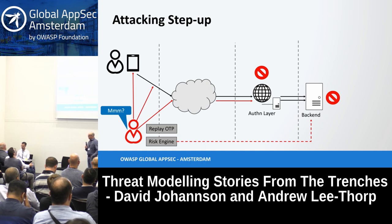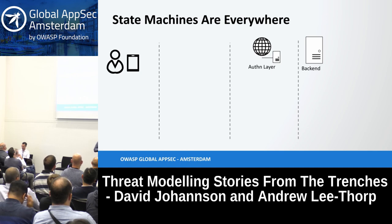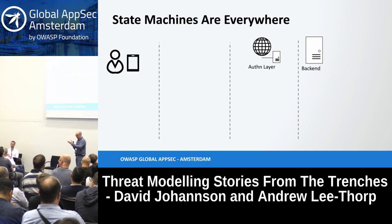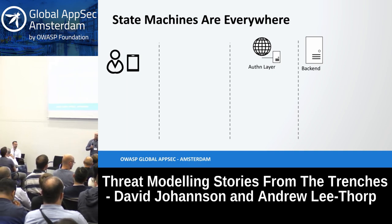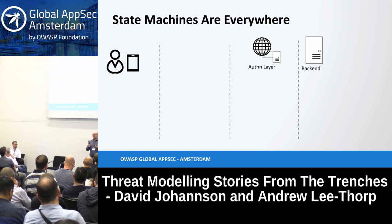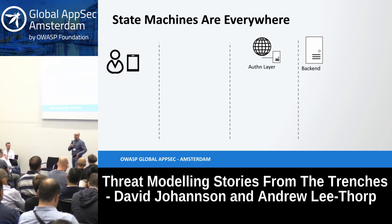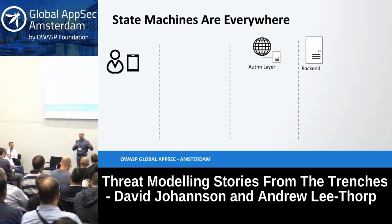What we need to remember is that when we're looking at these two-dimensional threat model diagrams, the systems also have a time dimension — a sequence diagram, a state machine. There's a state machine in every tier, and a state machine in the system as a whole. If that state machine is not coherent, maybe you can attack the state machine without attacking the attack surfaces directly.